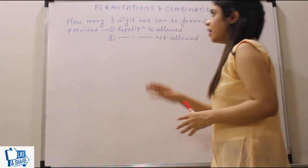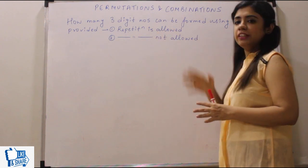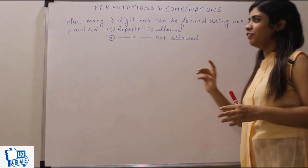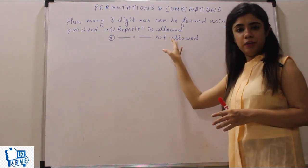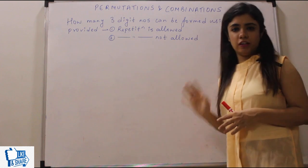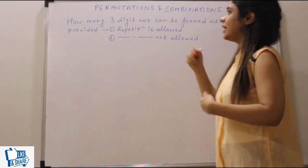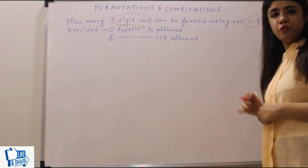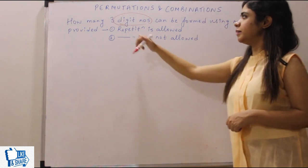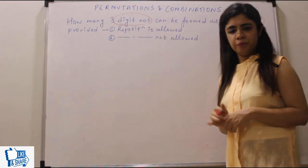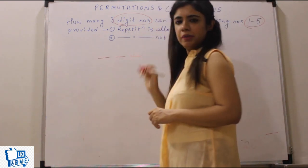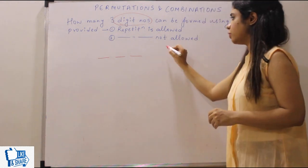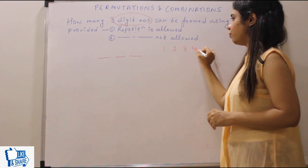How many three-digit numbers can be formed using the numbers 1 to 5, provided the repetition is allowed, and also when the repetition is not allowed? We have to make three-digit numbers. The options available are 1 to 5 — so we have 1, 2, 3, 4, 5.